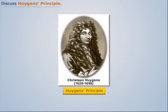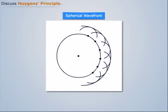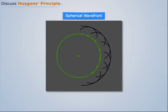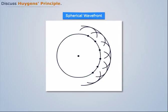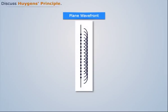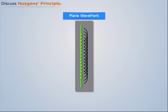Huygens' Principle was proposed by Christian Huygens. A single point source propagates a spherical wave, while an infinite plane wave continues as a plane wave.